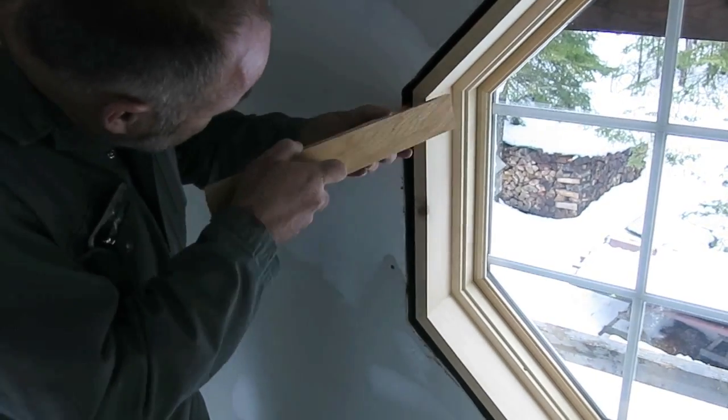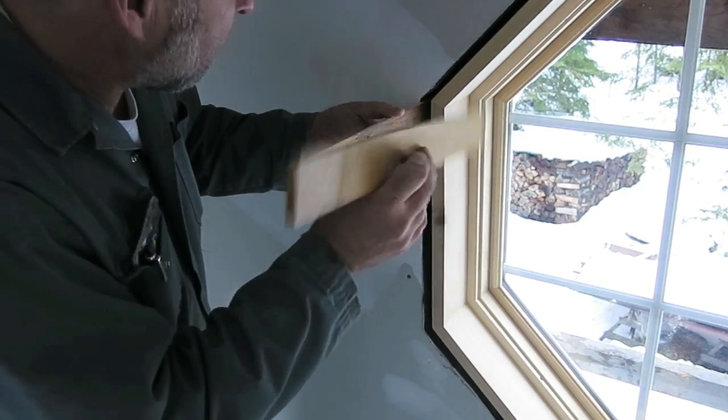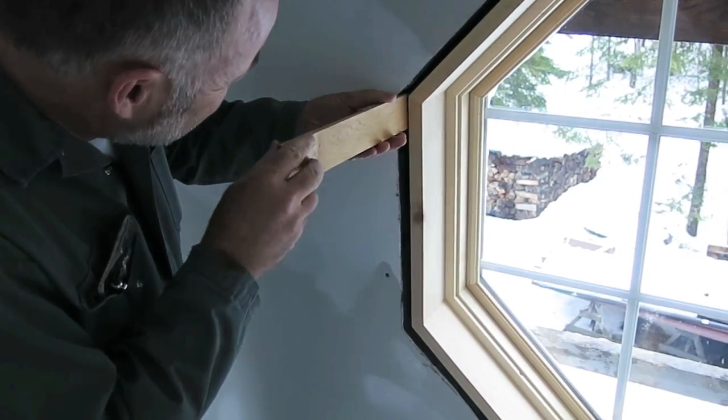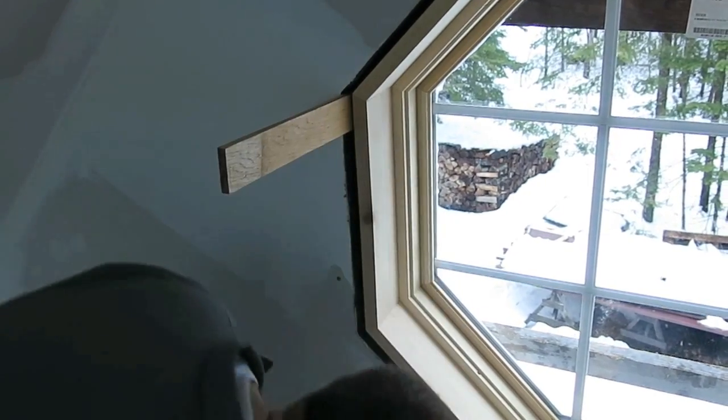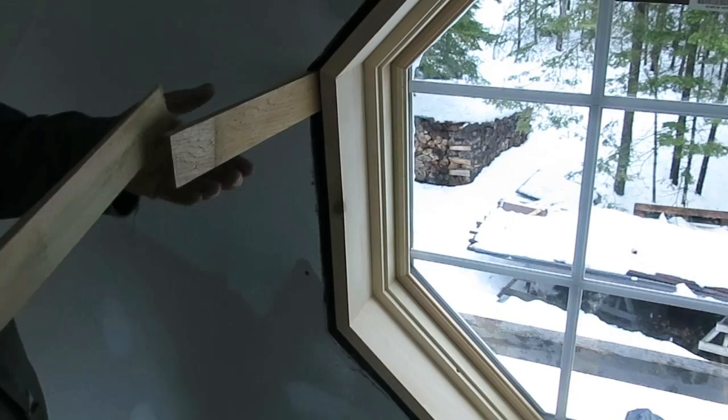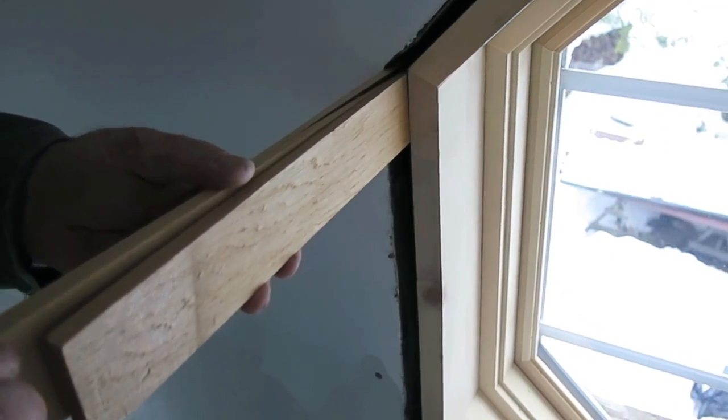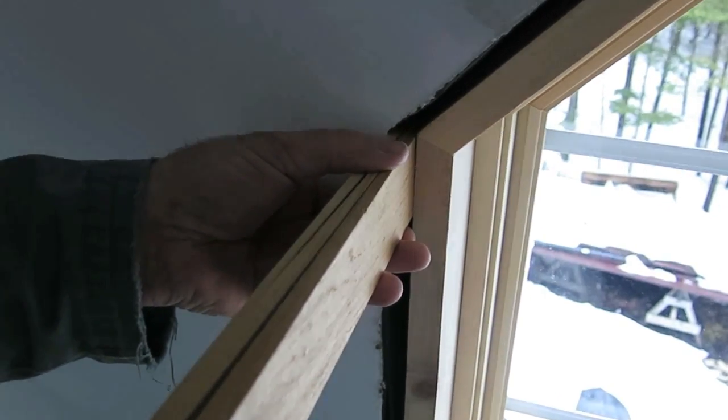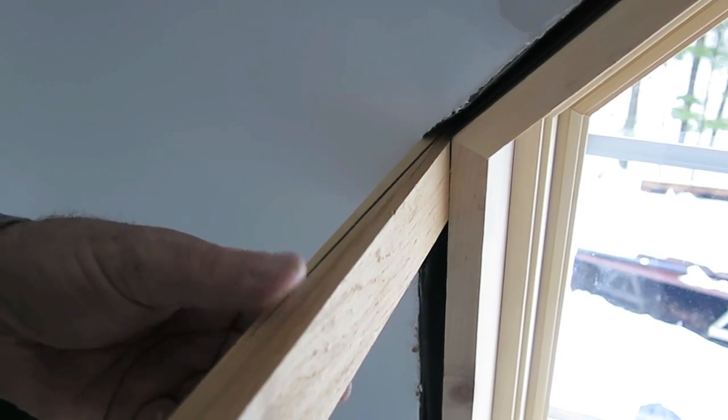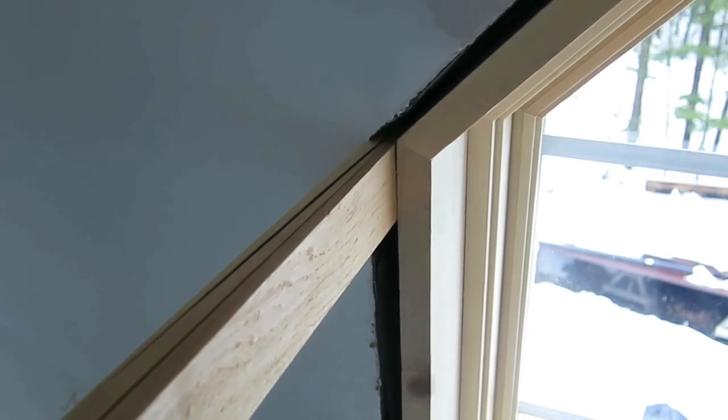With the window hoisted in place and pushed into the waterproofed opening, I'm fitting some wedges here. The wedges allow me to orient the window so that the bottom and sides are perfectly plumb and level. Later on, I'll be injecting some polyurethane spray foam in the gap around the outside. That foam does a lot to hold the window in place.